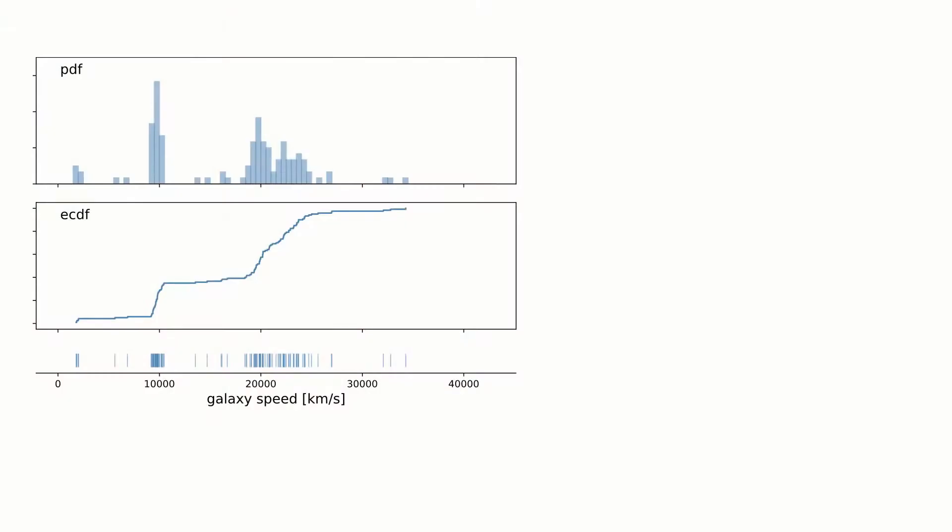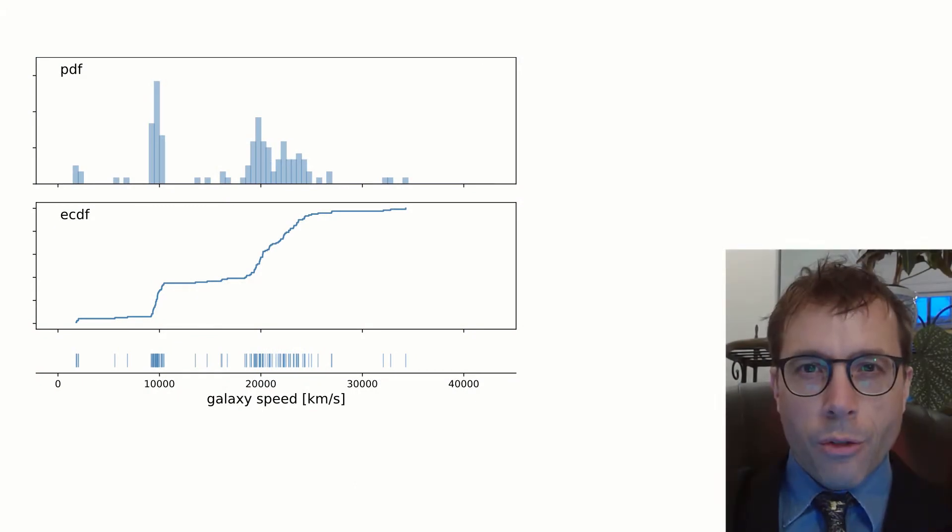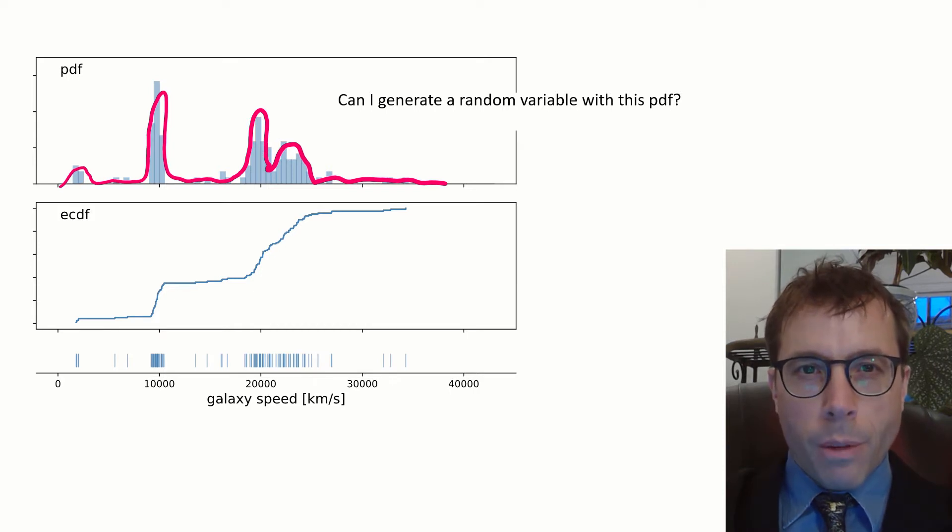Let's look at a picture. This is the dataset of speeds of galaxies, which we looked at in the last video. If we wanted a perfect fit, we could try drawing a very detailed custom PDF to try and match all the ins and outs of the histogram as closely as possible and then generate a random variable from this PDF.